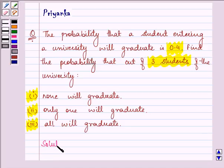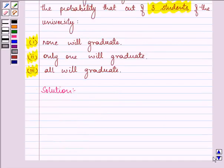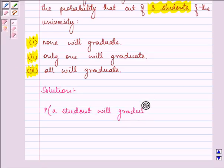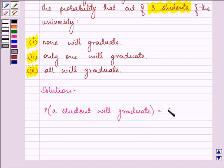Let us proceed with the solution one by one. We are given the probability that a student will graduate from a university as 0.4.